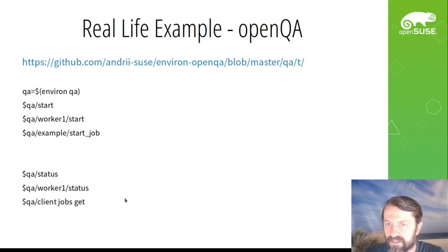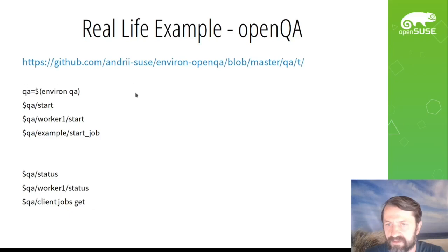One important aspect is that we can use the same commands in the script and from the terminal when doing a scenario manually — starting services or trying commands. We execute the same commands in the command line and can use tab completion to see these commands. A real-life example is OpenKa: it's very hard to get OpenKa started, but with Environs it's just a few commands.